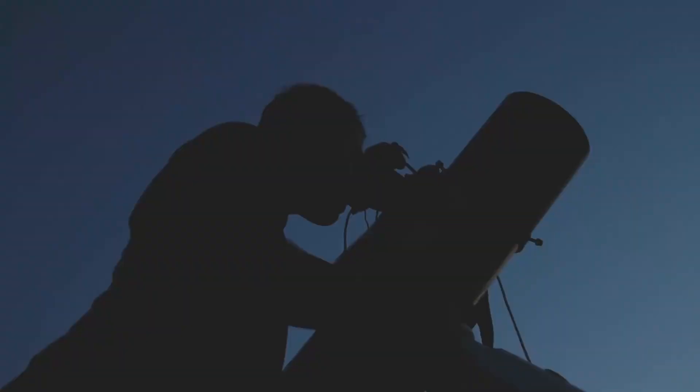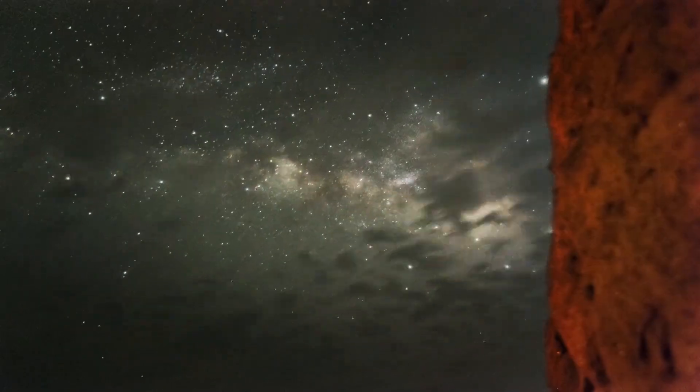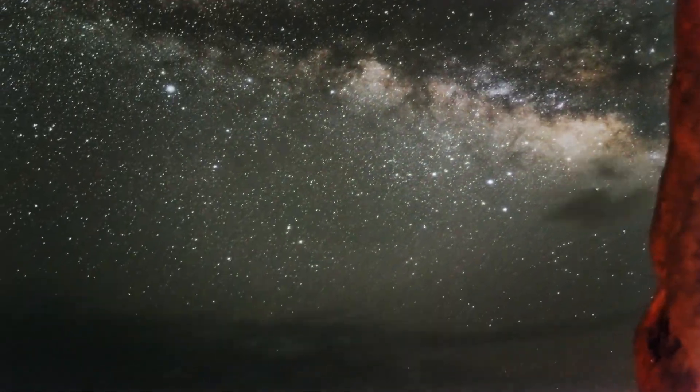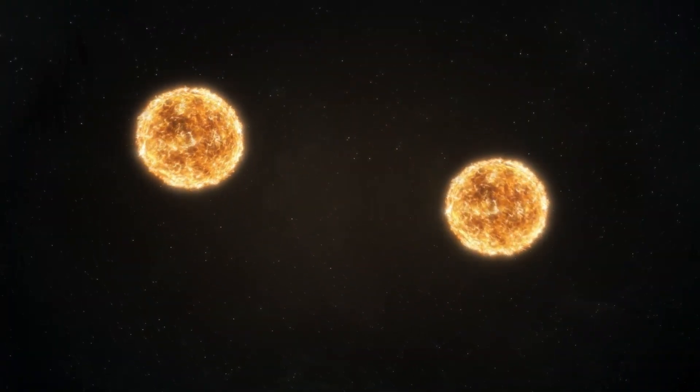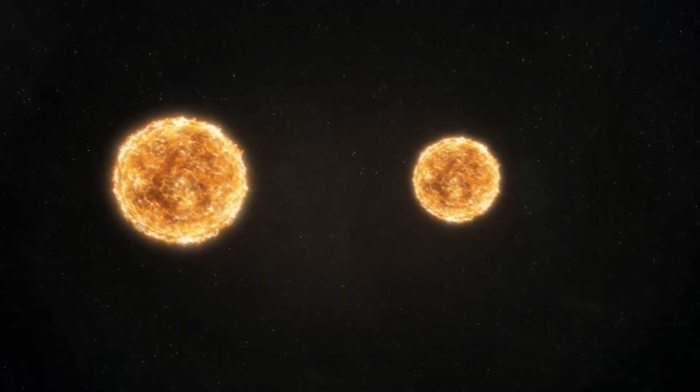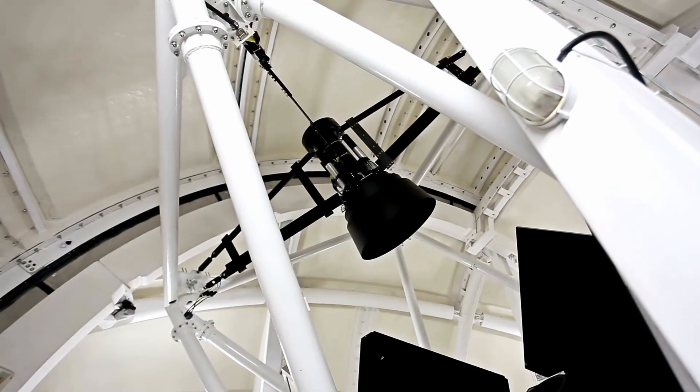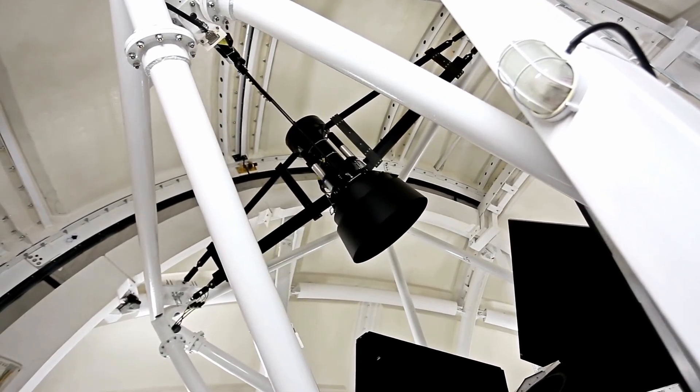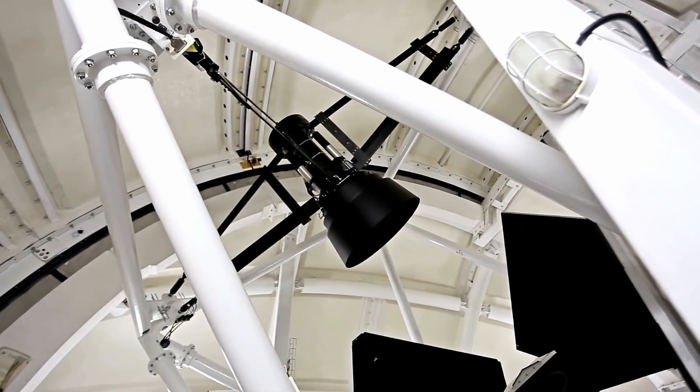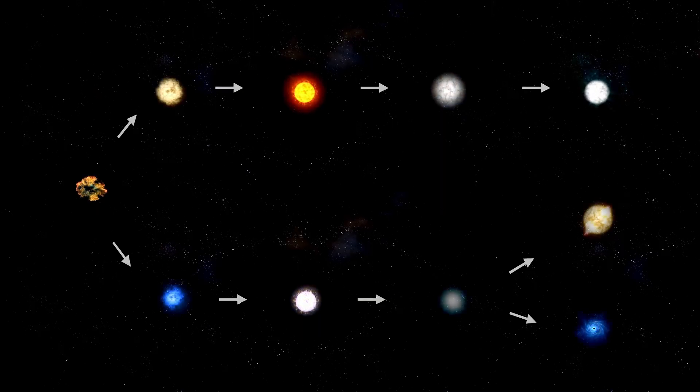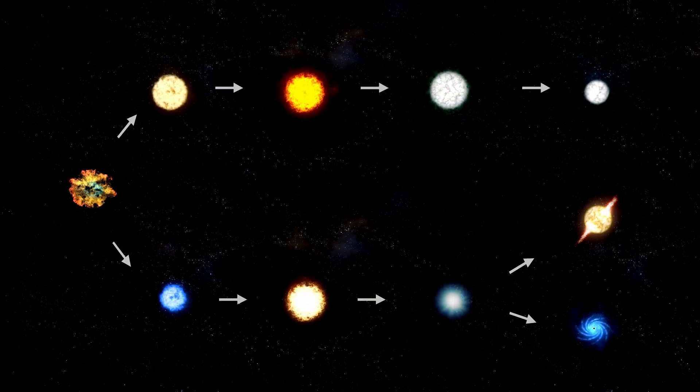More unsettling still, the signals contained harmonics that matched geological surveys of the Moon's hollow regions, vast caverns and voids deep inside its crust. Some scientists theorized that Atlas's pulse had activated these hollow zones, turning the Moon into a kind of resonant chamber. Others whispered darker possibilities that the Moon was never entirely natural, that it was designed to respond when called. Whatever the case, the evidence grew undeniable. Atlas had spoken, and the Moon had answered with a voice of its own.